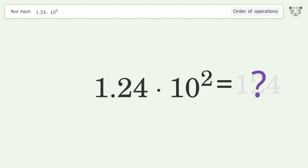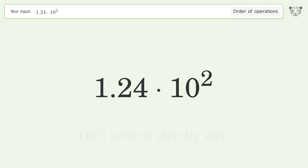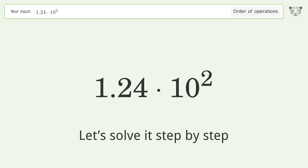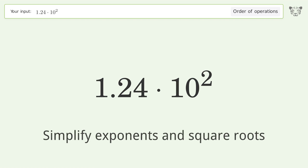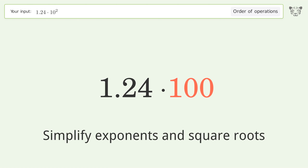You asked Tiger to calculate this. It deals with the order of operations — the final result is 124. Let's solve it step by step.